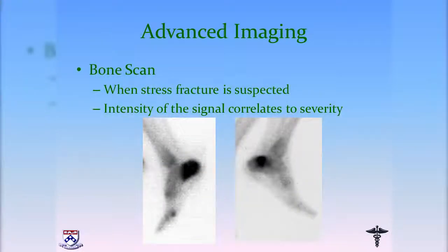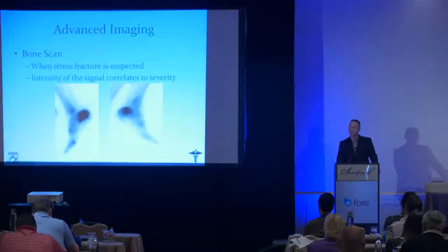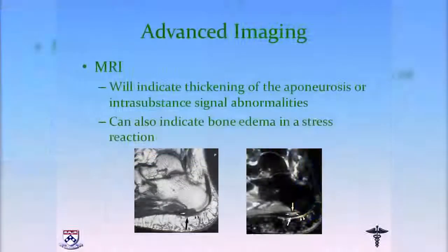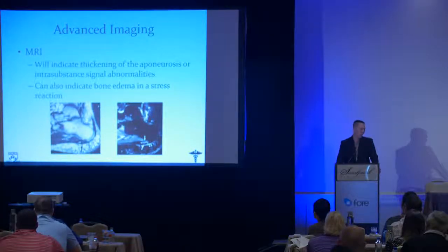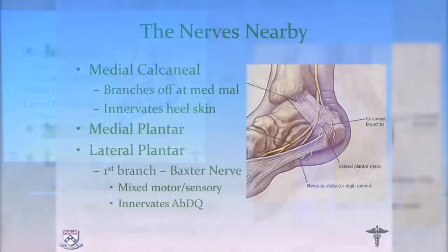For imaging, start with x-rays — you can sometimes see chronic stress fractures. If uncertain, a bone scan is an easy test to order. MRI gives two pieces of information: you can see thickening of the plantar fascia with intersubstance signal changes, and you can also see marrow edema for a calcaneus stress fracture. On the T2-weighted images, there's edema at the insertion where the arrows point, more indicative of plantar fasciitis.